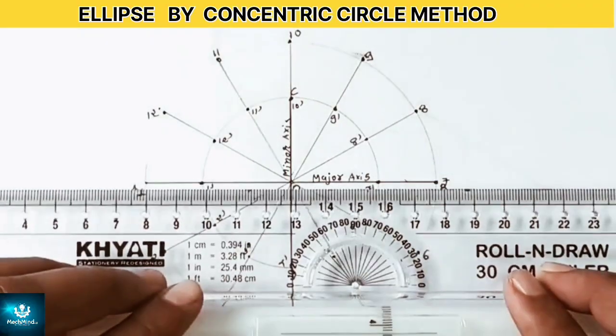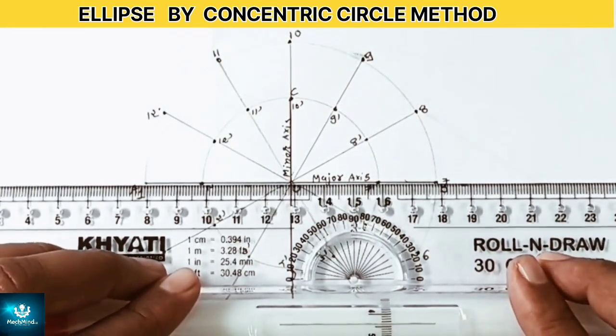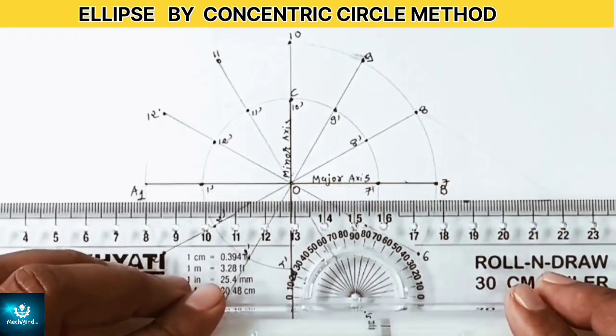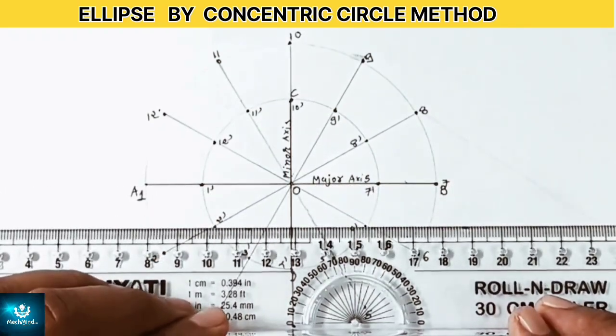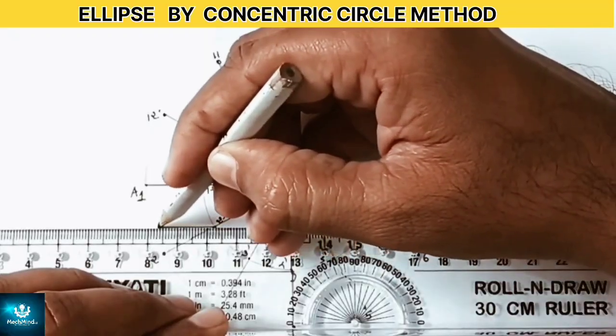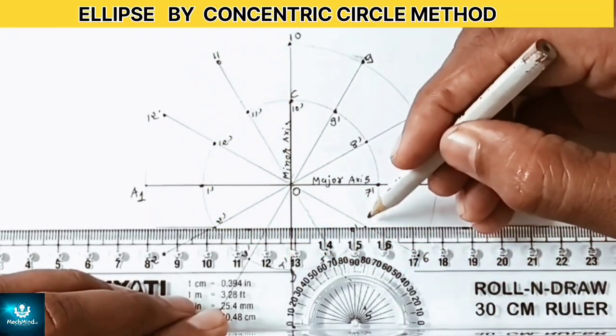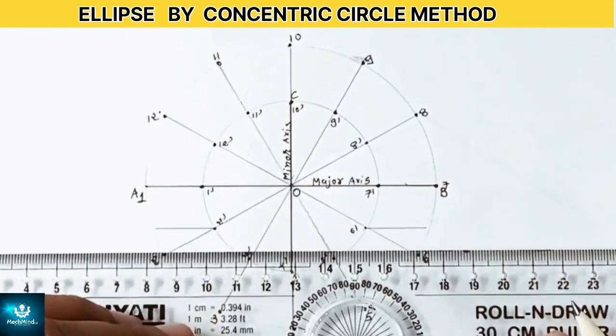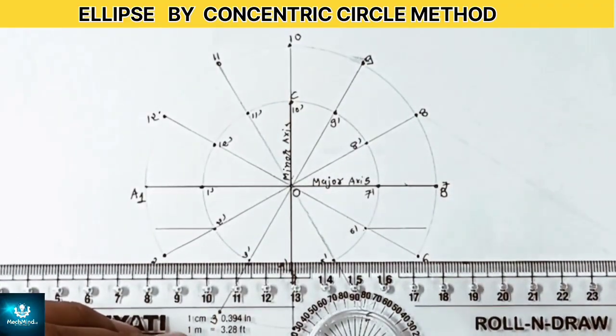Now using roller scale draw horizontal lines from each division point on the inner circle. So first set your roller scale then draw horizontal lines from point number 1 dash, 2 dash, 3 dash, 4 dash, 5 dash from each division point on the inner circle.